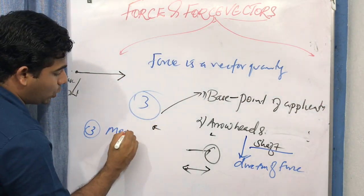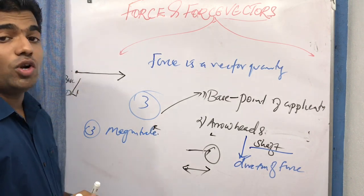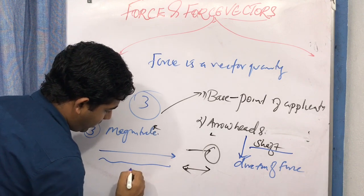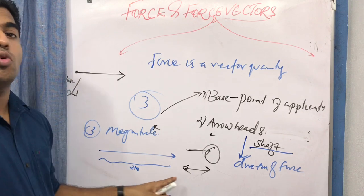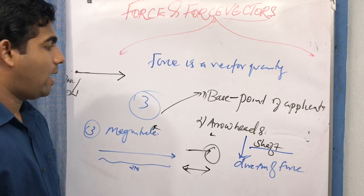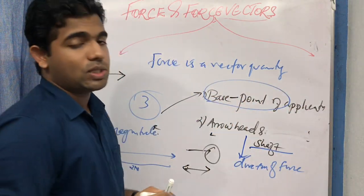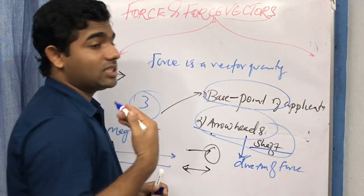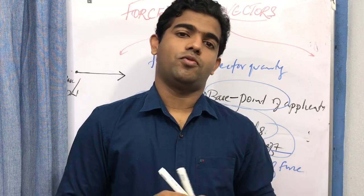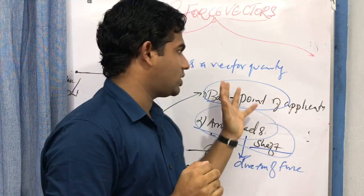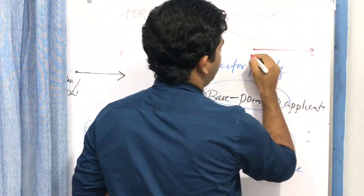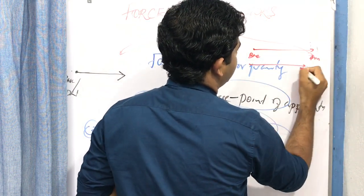The third important parameter is the magnitude — the amount of force — expressed by the length of the force vector. For example, a force vector labeled '10 N' indicates its magnitude. The magnitude can be expressed either by the length of the arrow or in Newtons. So a force vector has three parameters: (1) base or point of application, (2) arrowhead and shaft showing direction, and (3) length or magnitude showing the quantity of force.